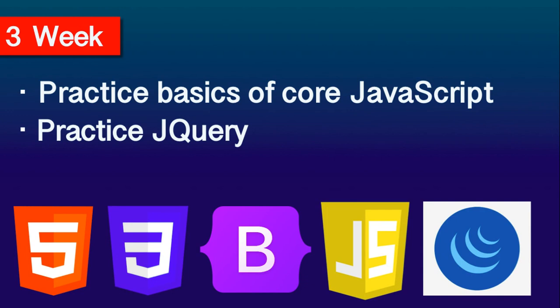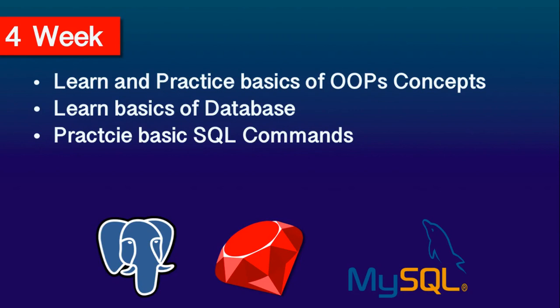In the fourth week there are three things to cover. First, learn and practice basics of OOP concepts. In the fourth week focus on OOP concepts like classes, objects, methods, inheritance, abstraction, abstract classes and others, because Ruby is a pure object-oriented programming language and you have to deal with these concepts in both Ruby and Rails. Two days should be enough at four to five hours every day, but if not, just increase by a couple of hours — restrict this to two days only.